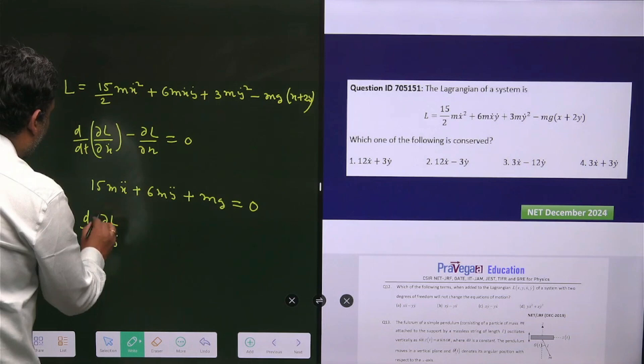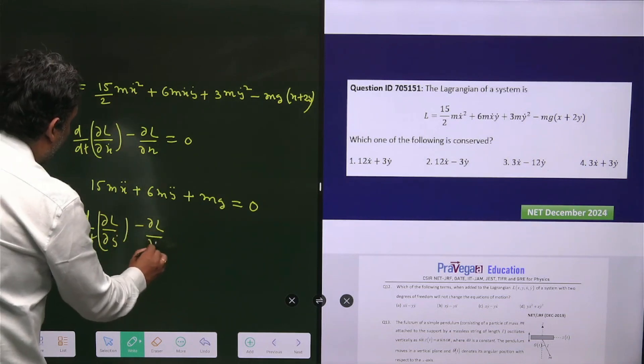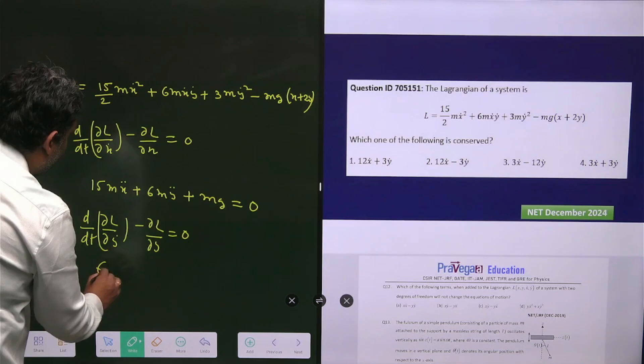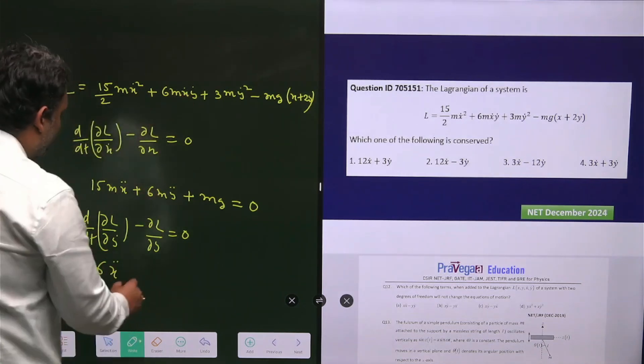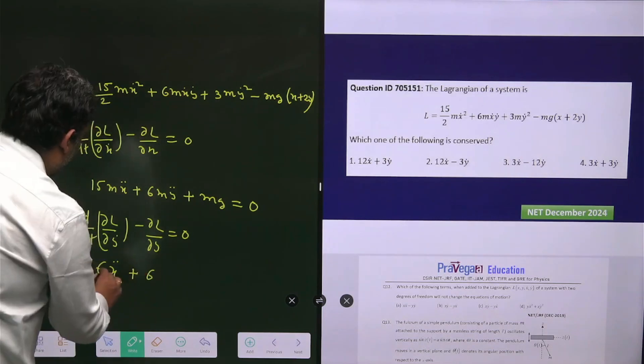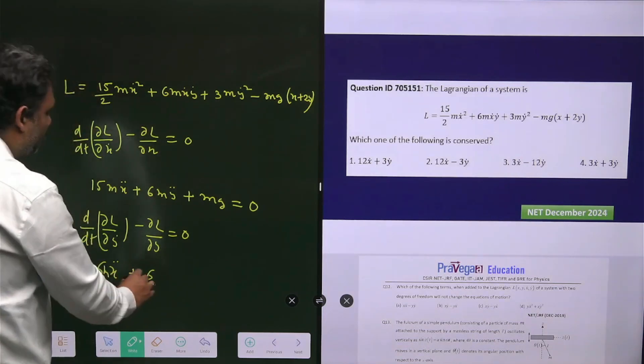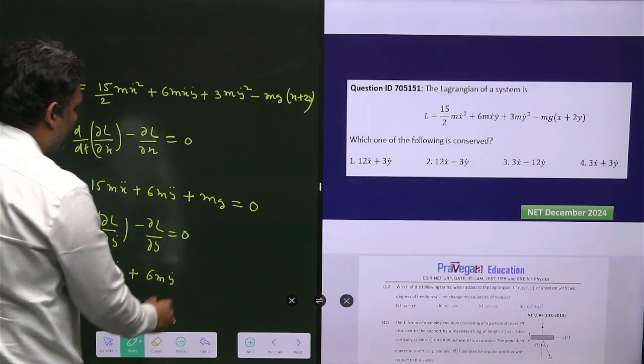The second equation: d/dt(∂L/∂ẏ) - ∂L/∂y = 0. Here you have 6mẍ because ẏ will be gone, ẋ will be there, then you have +6mÿ.